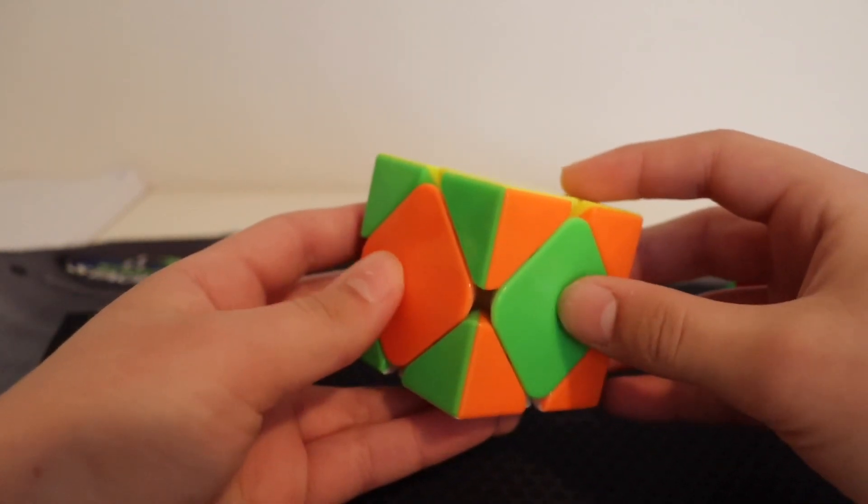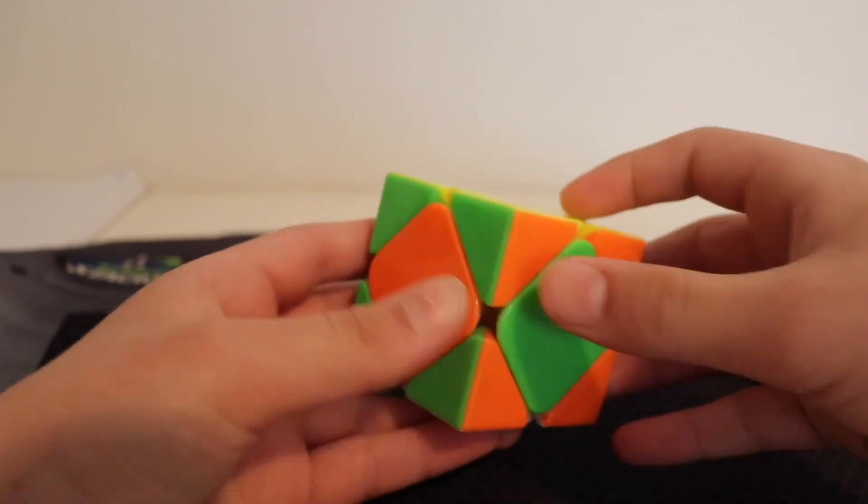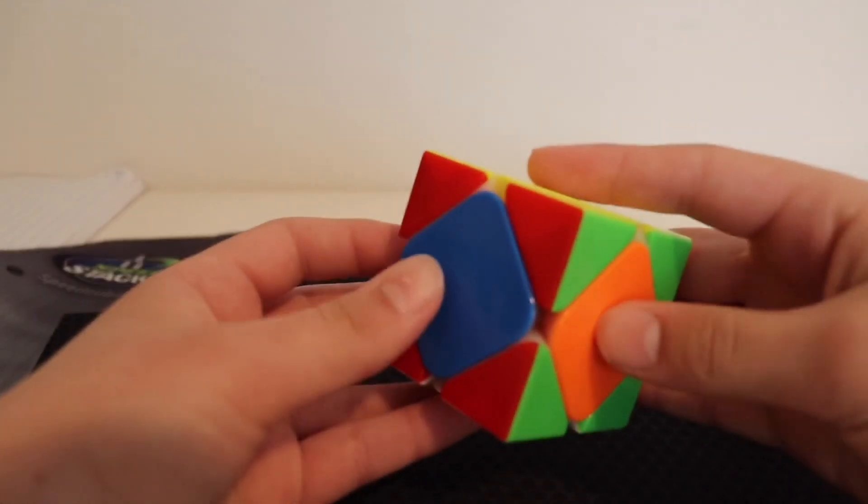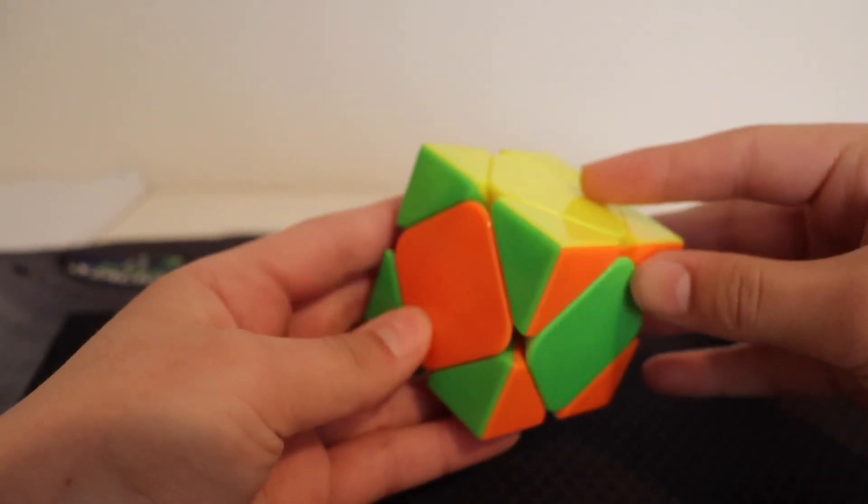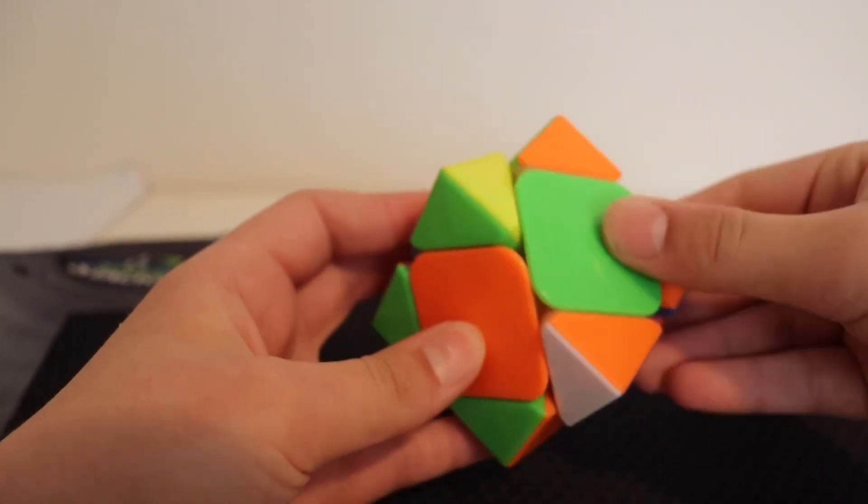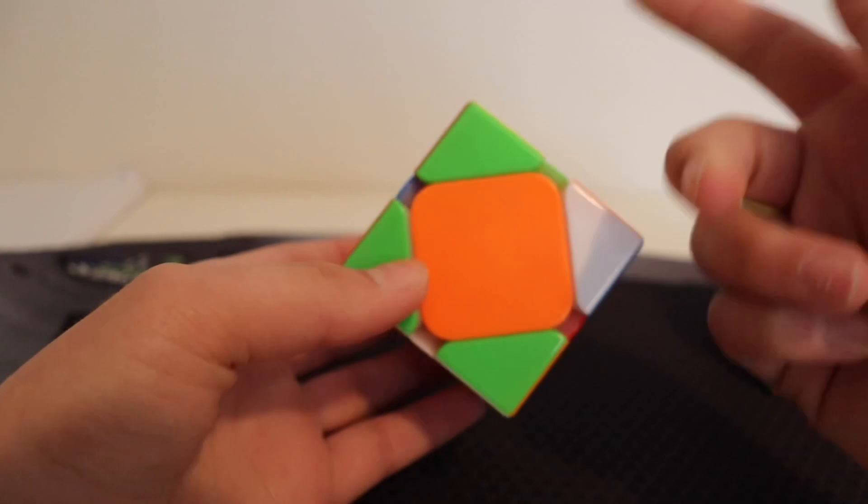So, you're going to find centers that need to be swapped like this. So, not centers need to be swapped like this, because this doesn't swap. So, just like this. And you're going to move the one on the right up, and then a triple sledge or three sledges.